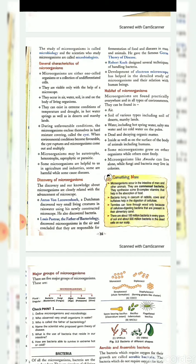Discovery of micro-organisms. Our discovery and knowledge about micro-organisms are closely related with the advancement of microscopes. Anton van Leeuwenhoek, a Dutch man, discovered very small living creatures in rainwater using his newly constructed microscope. He also discovered bacteria and found micro-organisms with the help of his microscope.